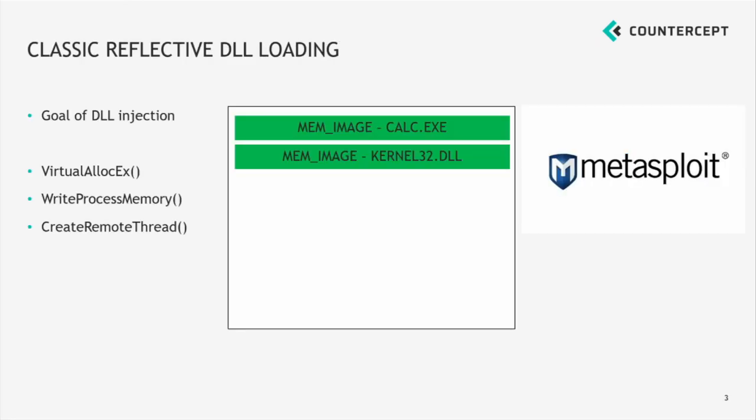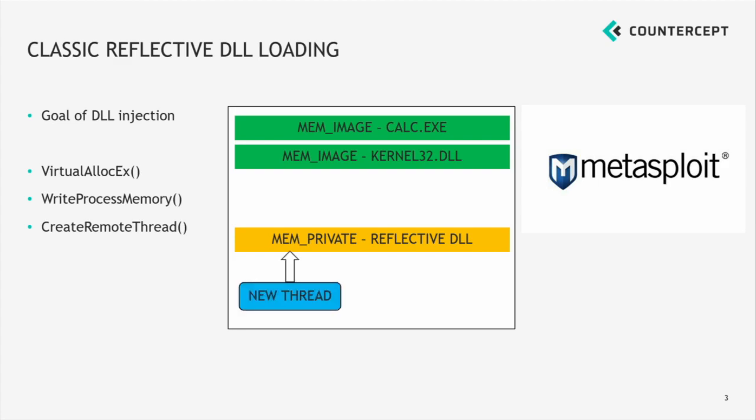So what does this look like going back some time? What are the classic ways people are doing this? A common approach is reflective DLL loading. This is something that frameworks like Metasploit have been using for many years, dating back over a decade with Meterpreter. The classic access pattern is where you migrate your implant from a process you're currently in into another legitimate process to hide it, using API calls like VirtualAlloc, WriteProcessMemory, and CreateRemoteThread. You virtualize some space as a privately allocated region, make it read-write-execute, write your malicious code into it, and create a new thread that runs it.